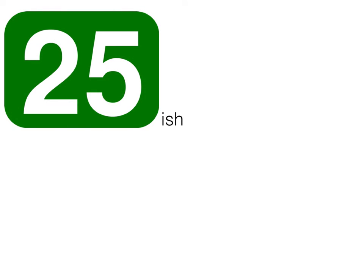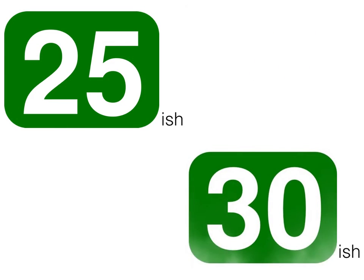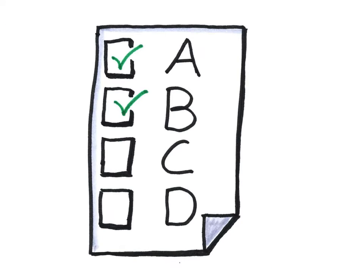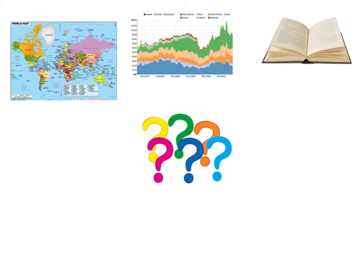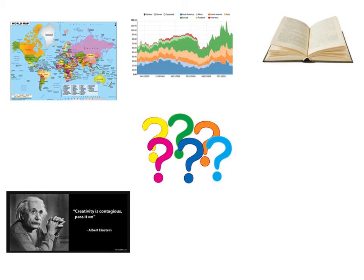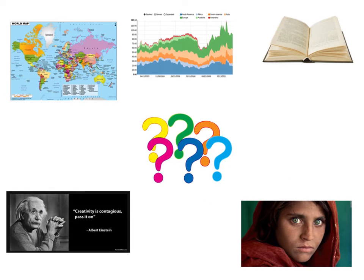Part 1: The first part will replace the current 50 multiple choice questions. Instead, students will be faced with responding to between 25 and 30 questions. Each of these questions will be multiple choice and stimulus-based. That means each question will be attached to a map, a chart, a reading of up to 300 words, a quote, a photograph, or other primary or secondary source material.